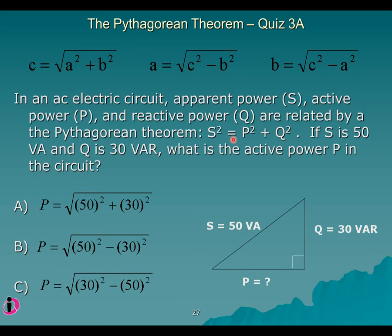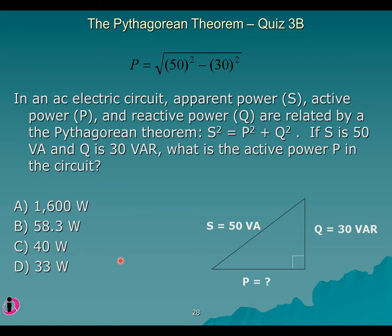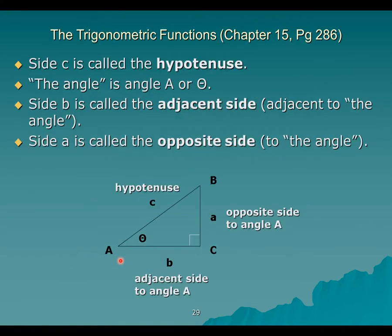Similarly for apparent power, active power, and reactive power — if you know apparent power S and reactive power Q, you can find active power P using the same Pythagorean relationship. The answer is 40 watts. Anywhere you have a right triangle, you can apply the Pythagorean theorem.